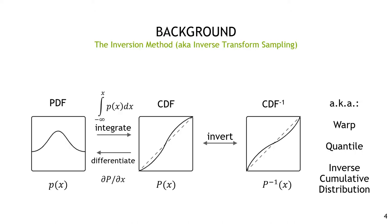One of the most important and commonly used tools we have for Monte Carlo sampling is the inversion method, where we can create an ideal sampling function for the distribution we're trying to sample as long as we can analytically integrate and then invert this distribution. In one dimension the distribution is called the probability density function or PDF. The sampling function is called the inverse cumulative distribution, also known as a warp or quantile. In this talk when I refer to a warp I'm talking about the inverse cumulative distribution.